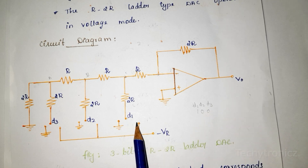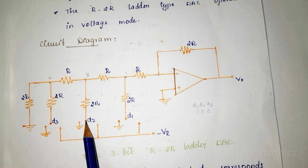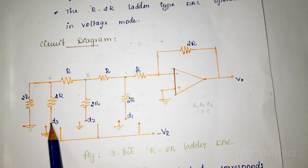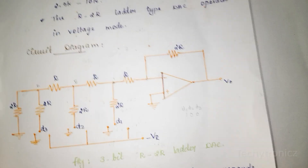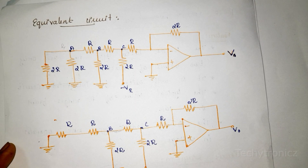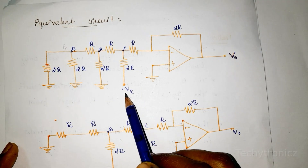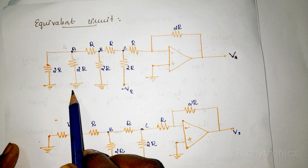If D1 value is 1, the D1 switch is connected to the reference voltage, that is negative reference voltage minus VR. D2 value is 0, that means it is connected to ground. D3 value is 0, that means it is also connected to ground. Let us see the equivalent circuit for binary word 1, 0, 0 — D1 is connected to minus VR, and D2, D3 are connected to ground.